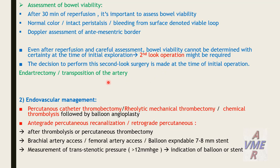The last option is endarterectomy and transposition of the artery. For endovascular management of acute mesenteric ischemia, options include percutaneous catheter thrombectomy, periodic mechanical thrombectomy, chemical thrombolysis, all followed by balloon angioplasty. Antegrade percutaneous revascularization using brachial access, or retrograde percutaneous using femoral access, with balloon or stent used when the trans-lesional pressure gradient exceeds 12 mmHg, indicating intervention.